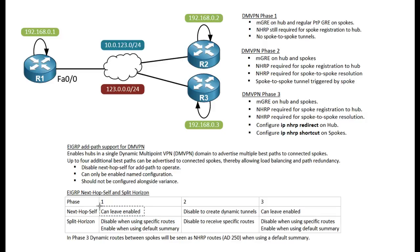The next-hop-self command can be enabled on the hub when using Phase 1 — it doesn't really do anything there. The only thing next-hop-self does for us is control the creation of dynamic tunnels, which is only relevant in Phase 2 or Phase 3.